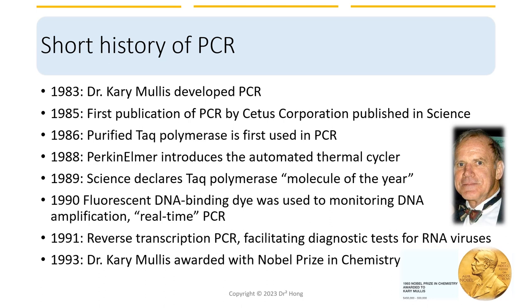The old days were in the early 1980s, when Dr. Mullis developed PCR when he was still a PhD student. Normally, DNA replication happens at the physiological temperature of 37 degrees Celsius. But there are hot spring microorganisms that survive and thrive at near water boiling temperatures. So it took several years to isolate the special DNA polymerase, Taq polymerase, from these microorganisms and use it in PCR.